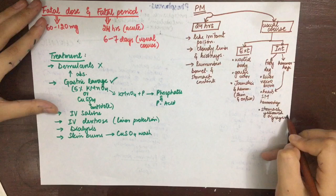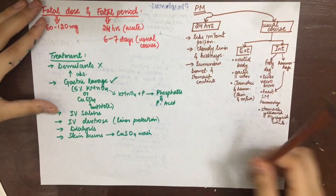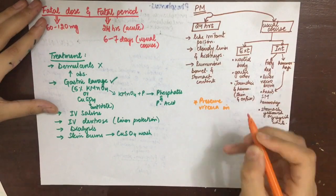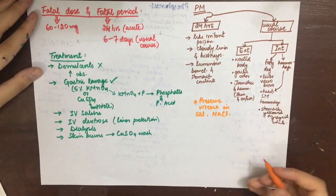Remember to preserve the viscera in saturated sodium chloride, not in spirit, because the luminosity of the sample can be lost.